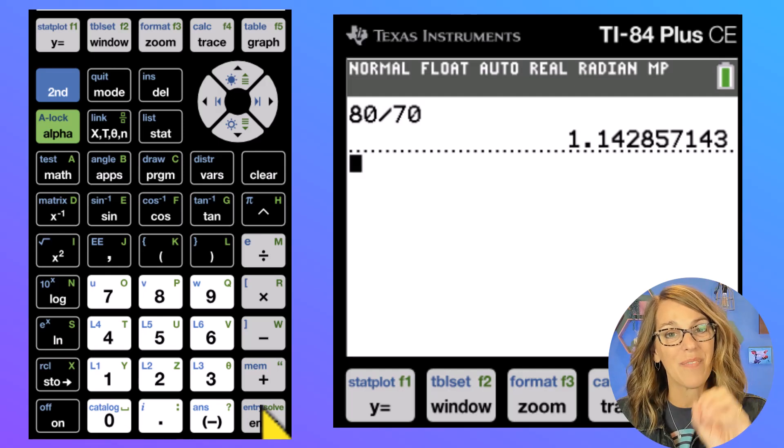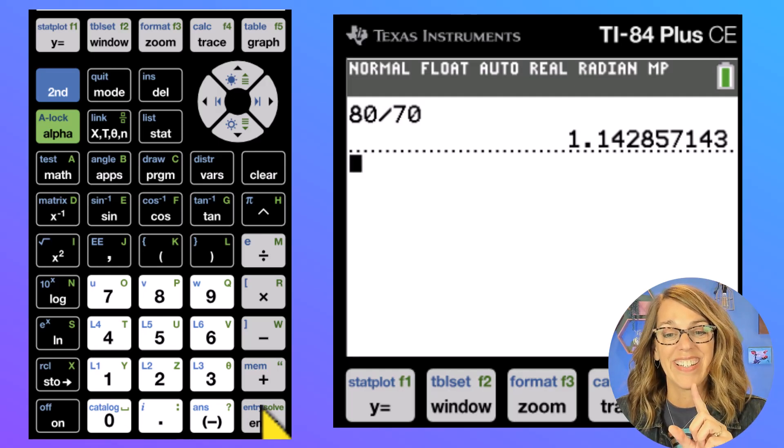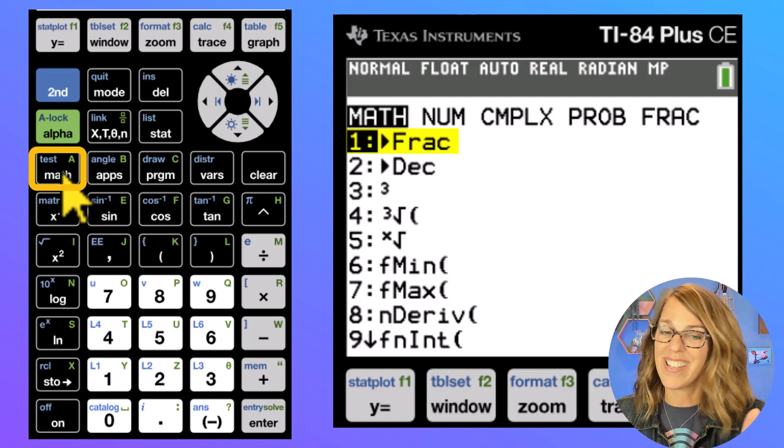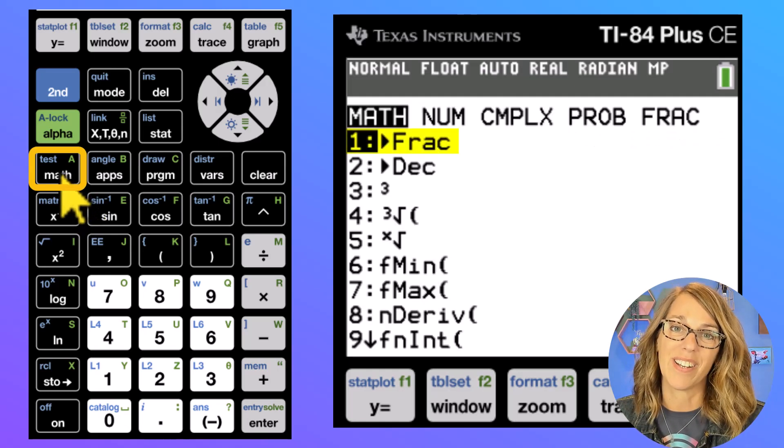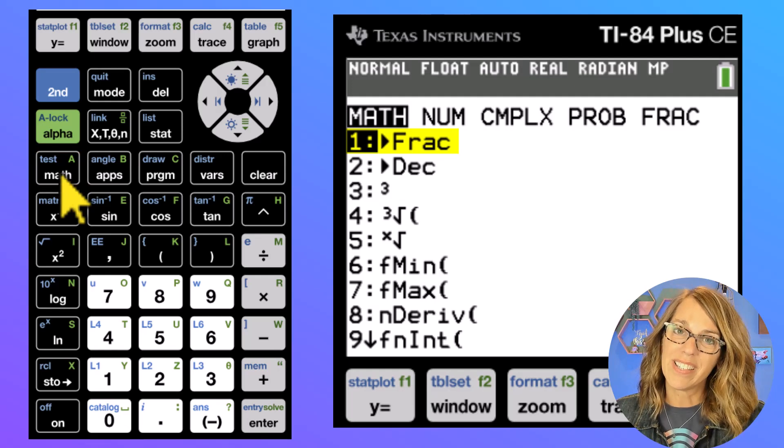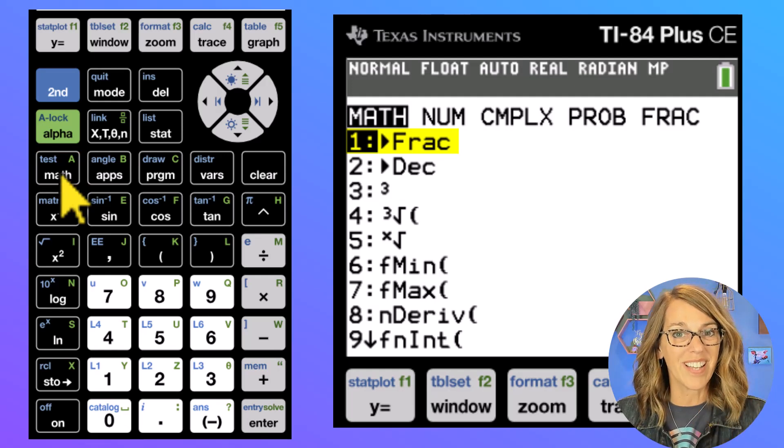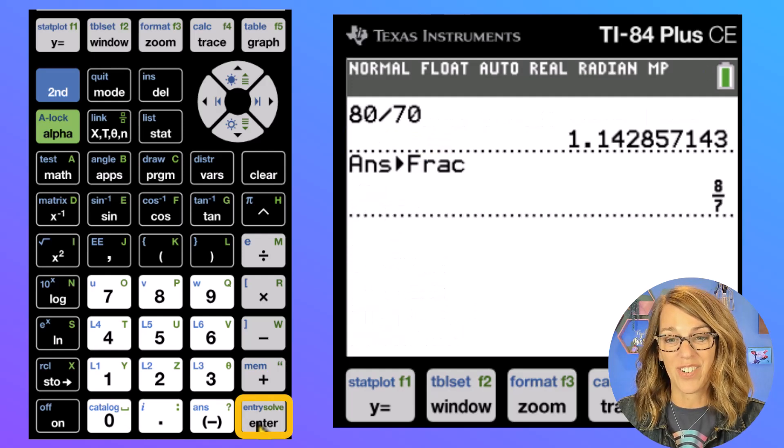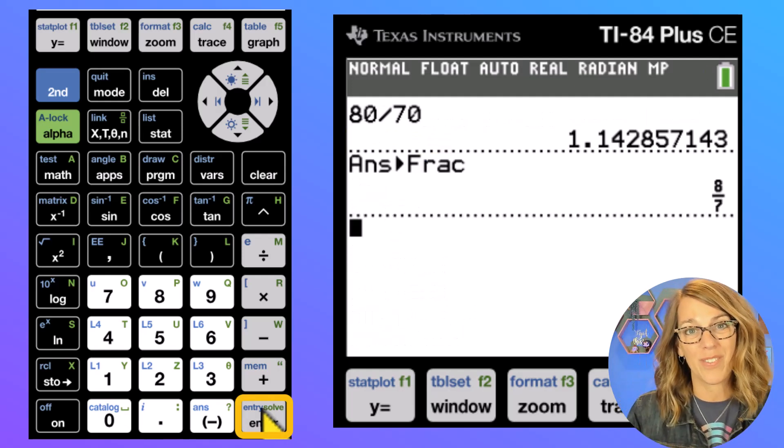So let's say for example that I wanted to do 80 divided by 70. So 80 divided by 70, it gives me this decimal 1.14 blah blah blah. But I wanted it as a fraction instead. To get it into a fraction, I'm going to go to my math menu. And the very first option there is convert to fraction. So you can hit the number one or since it's highlighted, I can just choose enter, choose enter again, and it gives me the reduced fraction.